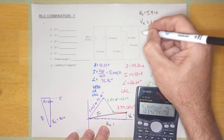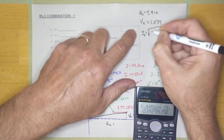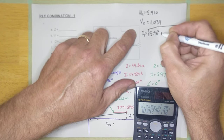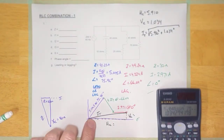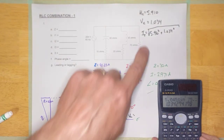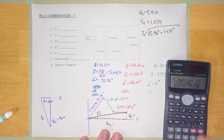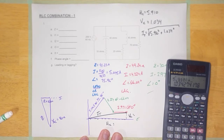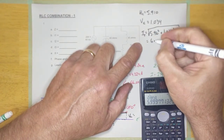With those components, I can calculate I total. It is going to be equal to the square root of 5.910 squared plus 1.034 squared — that's that right-angle triangle right there. Let's calculate: 5.910 squared plus 1.034 squared, square root — it is 6 amps.